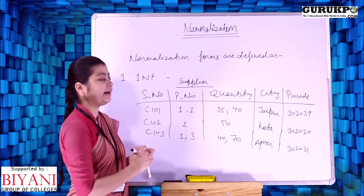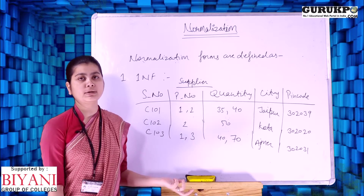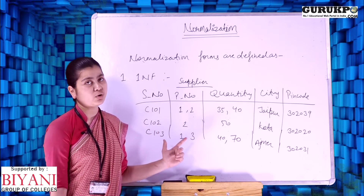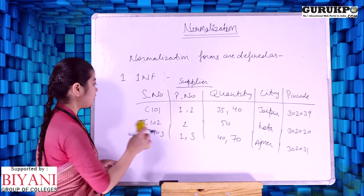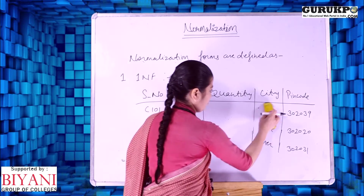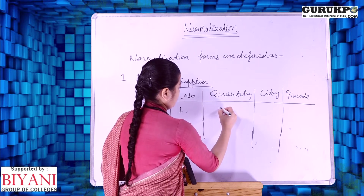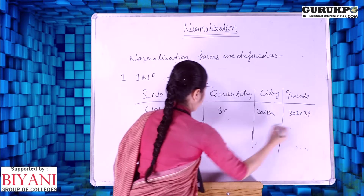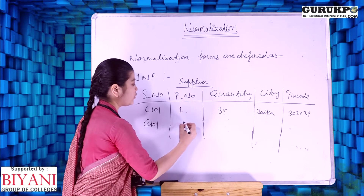Suppose we have a supplier relation which is an unnormalized relation, because in this relation we have double values in a single column. After applying First Normal Form, that relation table is transformed so that we separate values like predict number 1 and 3 into separate single rows without any repetition.